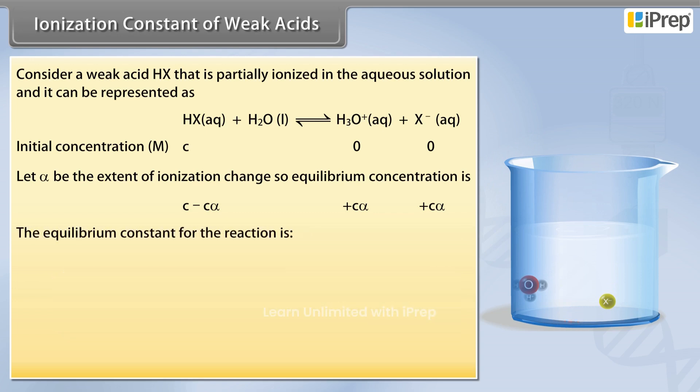The equilibrium constant for the reaction is Ka equals C squared alpha squared divided by C times 1 minus alpha.